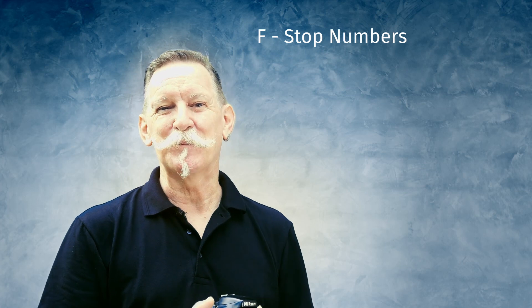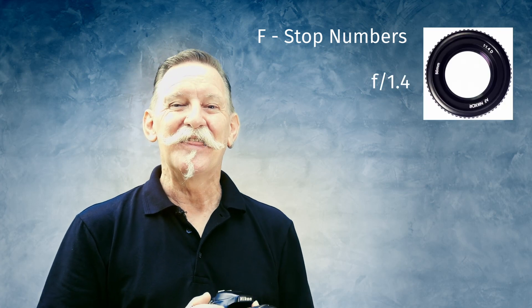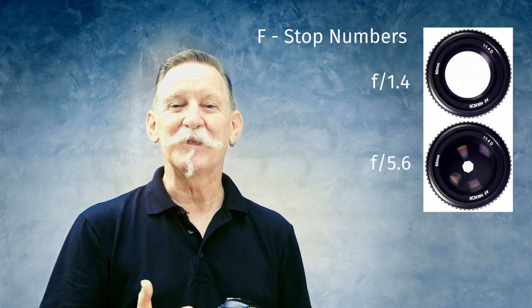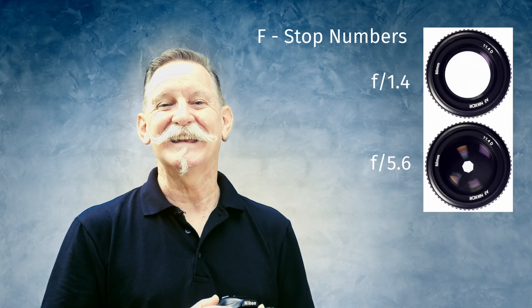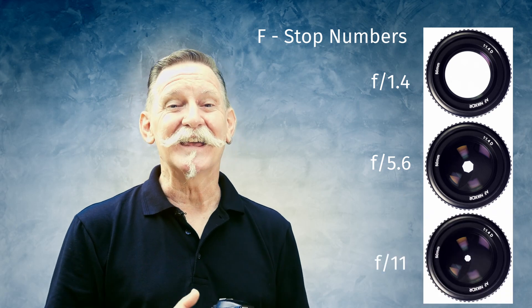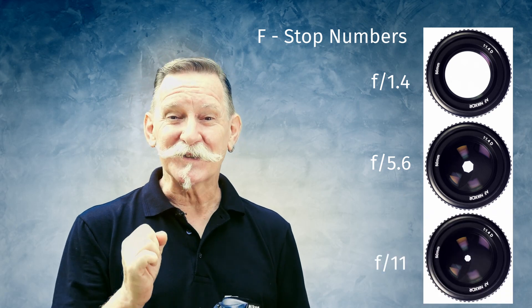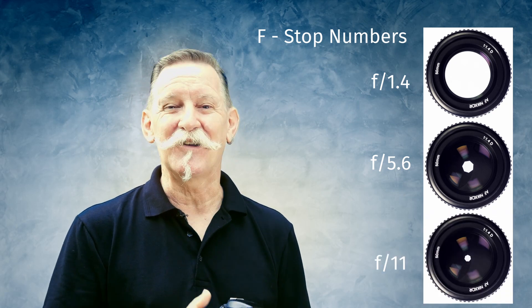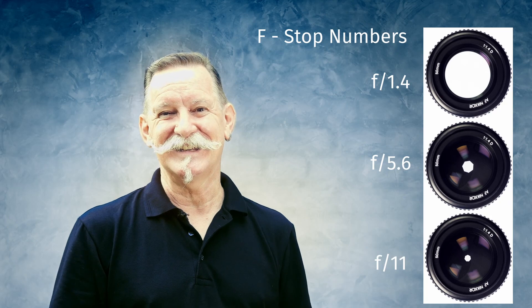The size of the aperture opening is measured in f-stop numbers. The lower the f-stop number, the more light can enter the lens. The higher the f-stop number, the smaller the hole is and less light will enter the lens.